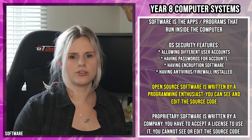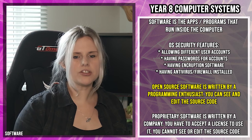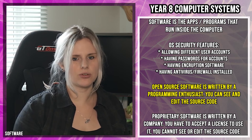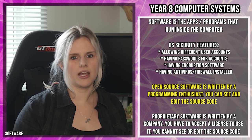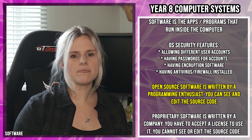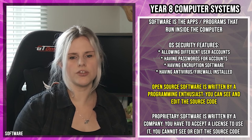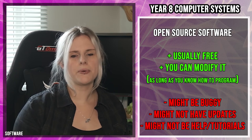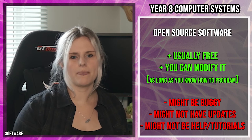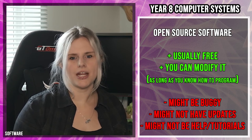There are two key types of software. Open source software is written by a programming enthusiast — someone who enjoys programming but isn't employed by a company — so it is usually free. You can usually see and edit the source code; if you download it, change it and re-upload it, others can download your version. However, because it's made by an enthusiast rather than a company, it can contain bugs, might not work properly, there may be no updates, and there might not be any tutorials available.